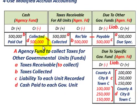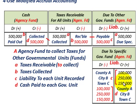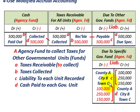We're going to go through three cases for how the agency fund operates. First, the case where the agency fund collects taxes for other governmental units. For example, the agency fund was set up through the city, and the city is going to collect taxes for the county portion — $100,000 — for the city itself — $250,000 — and for the township — $150,000. That totals $500,000. The first thing we do in our agency fund is set up our taxes receivable to be collected, which in T-account form would be debited for $500,000.